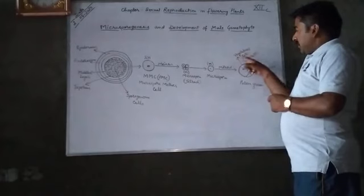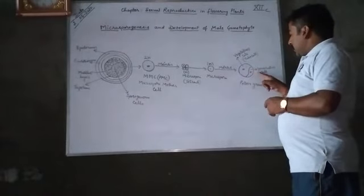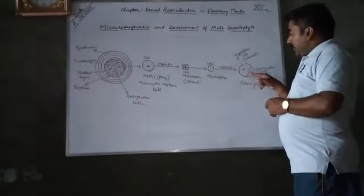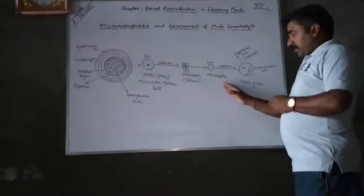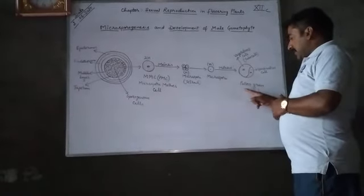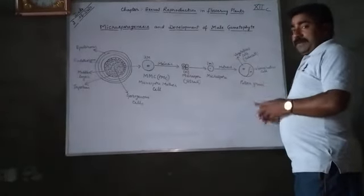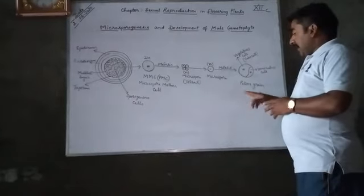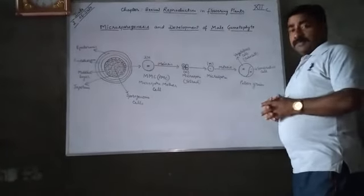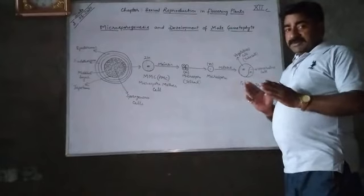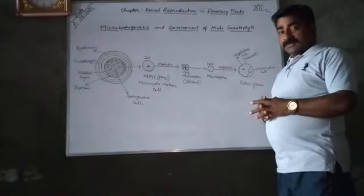The larger cell is the vegetative cell or tube cell because it forms the pollen tube, and the smaller one is the generative cell — both forming the nuclei. This partially divided microspore is known as a pollen grain. Pollen grains represent the male gametophyte in a flowering plant. We will study the detailed structure of mature pollen grains in our next lecture. Thank you and good day.